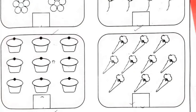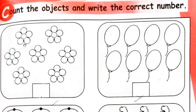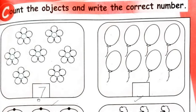Now page number 23 — 'Count the objects and write the correct number.' Here they have given you different objects; you have to count them and then write the correct number in the box. First one: flowers. Let me count for you — one, two, three, four, five, six, seven. So you have to write number seven here.